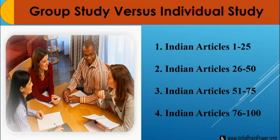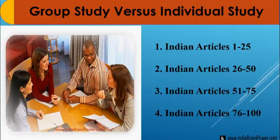For example, if you have to memorize the articles of the constitution and you are four friends, you can divide all the articles equally — one friend prepares articles 1 to 25, another from 26 to 50, and so on. So that when you sit in the group, you can contribute to each other.